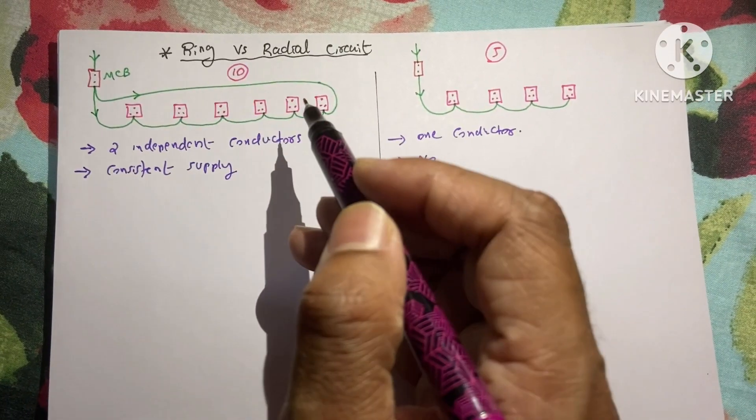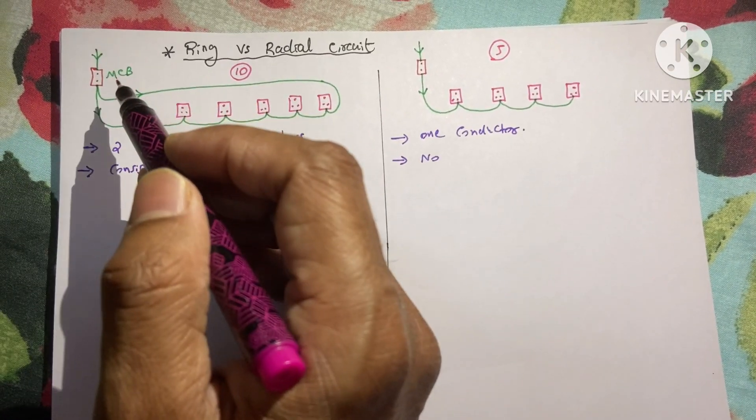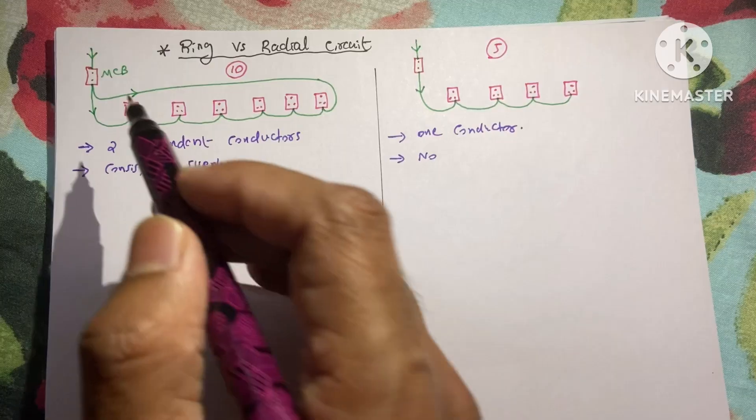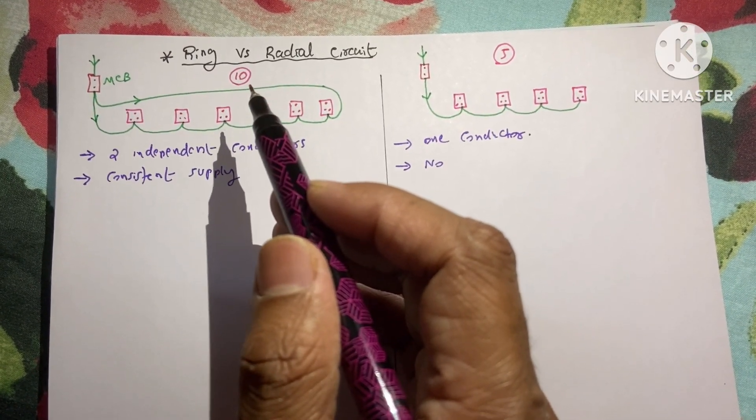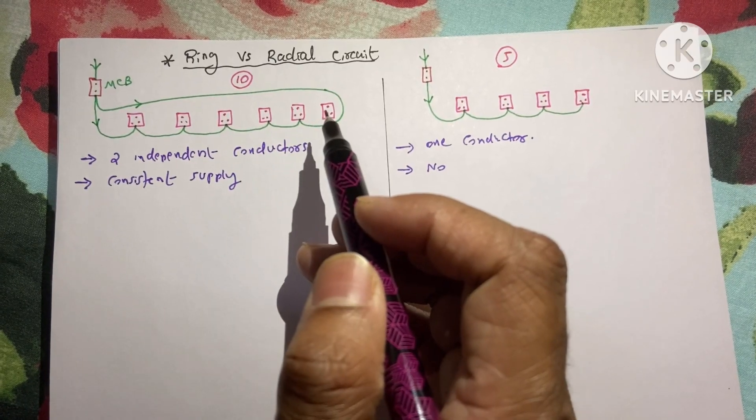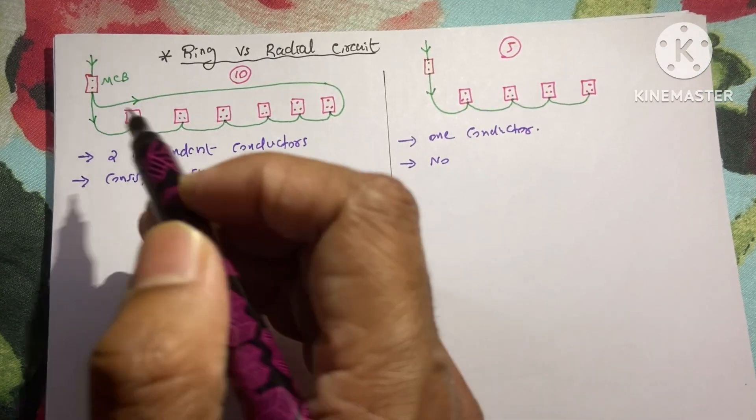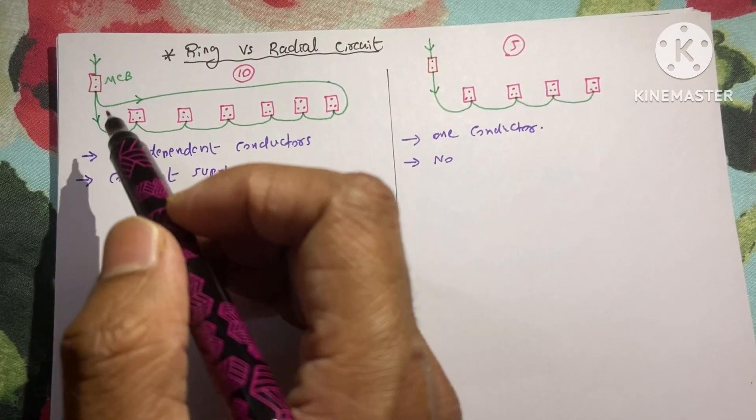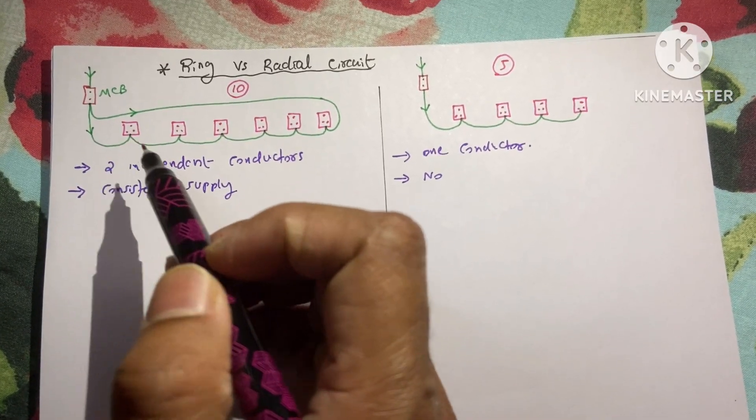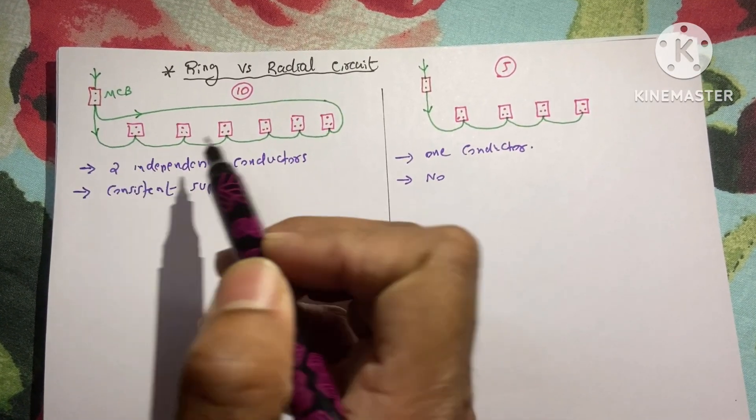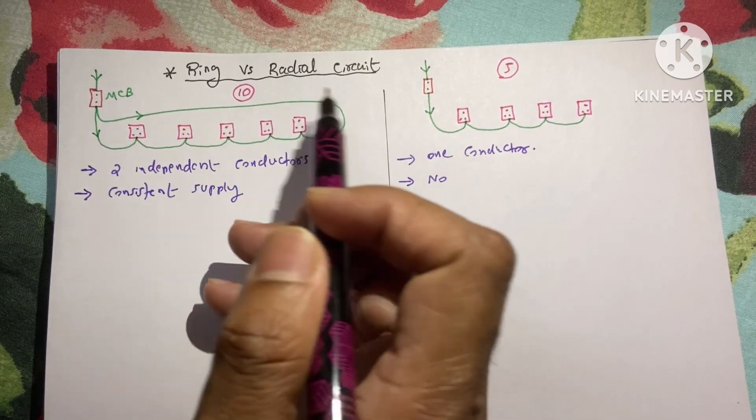Here we have a diagram with our MCB in the DB and these are the sockets. In ring circuit we can connect maximum of 10 number of sockets in one circuit, and here we can see two independent wires are going from this MCB to the sockets. One through this way and another through this way.